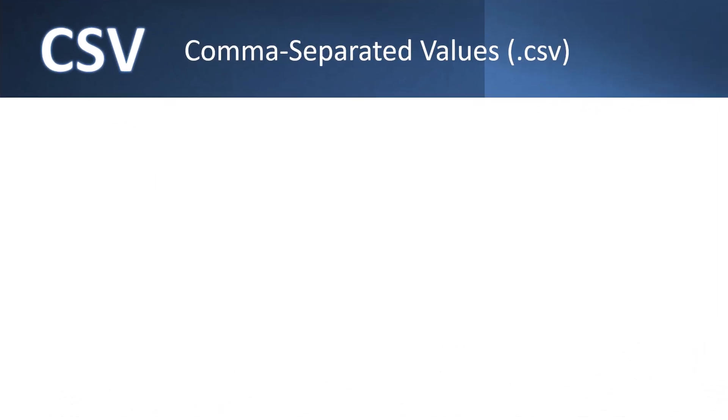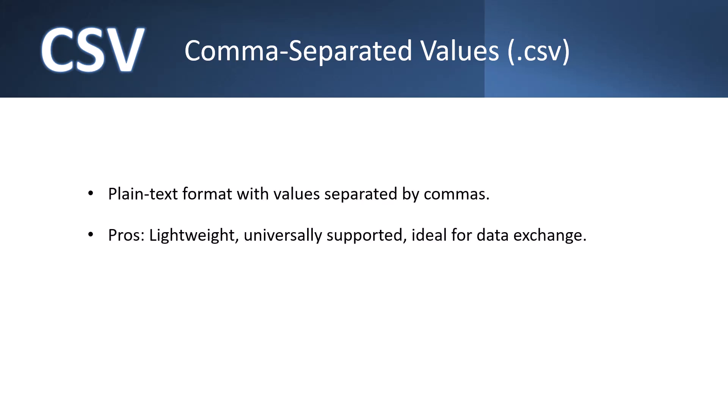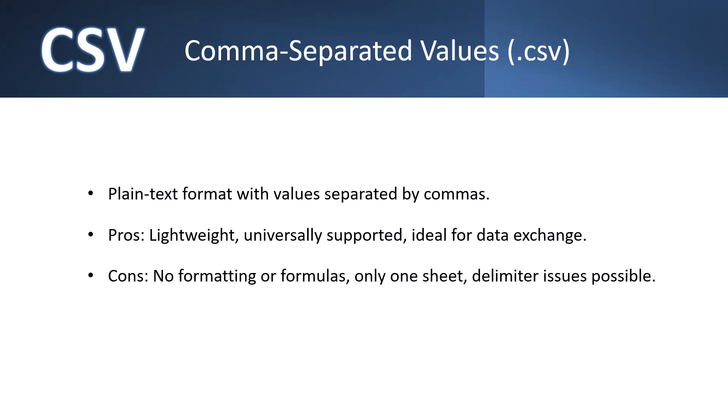CSV files — comma-separated value files — are not technically an Excel file format; they're plain text formats with values separated by commas. The pros: they're incredibly lightweight, universally supported, and ideal for data exchange. The cons: there's no formatting support, so you lose all styling; formulas are not retained, only the results; and CSV files only support one sheet at a time, so you'll need separate CSV files for each sheet. These are best for simple data exchange and system integration. This also applies to tab-delimited text files, typically saved with a .txt extension.